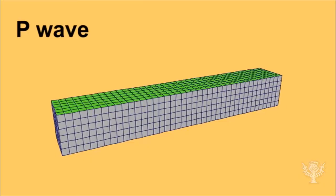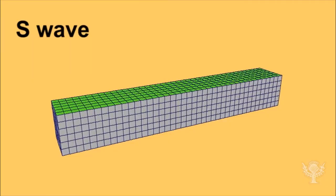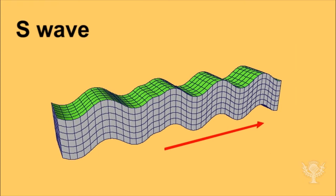Body waves and surface waves can also be divided into subcategories, like P waves, a type of body wave that moves quickly through solid rock, liquids, and Earth, and can sometimes be heard by animals, explaining why dogs may bark right before an earthquake hits.